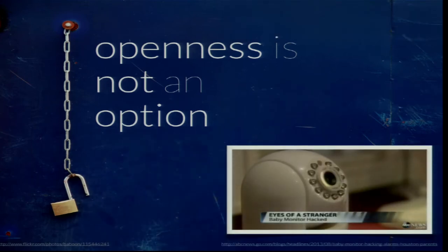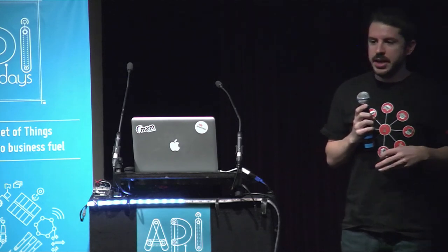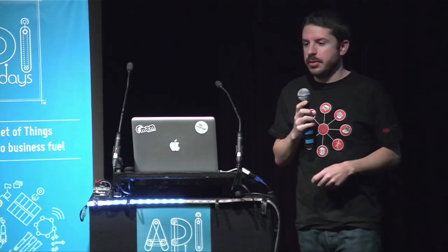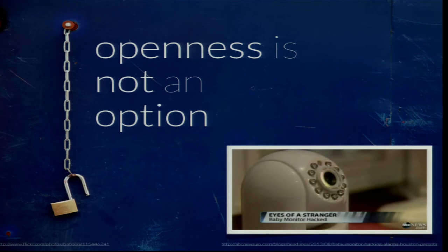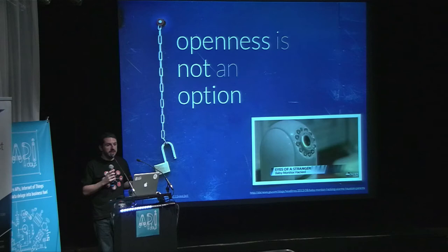As a recent example from a couple of months ago: a couple of parents in Houston, Texas went into the bedroom of their two-year-old daughter. They had an IP camera for monitoring the baby. When they entered the room, some guy was actually talking and swearing at the child, just because he had hacked into the system — because this solution wasn't really based on open source or open standards and was probably easy to hack. We need to have open options.